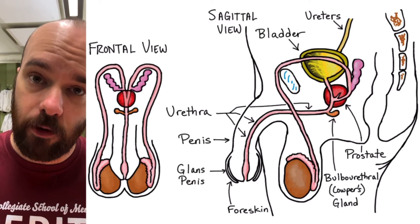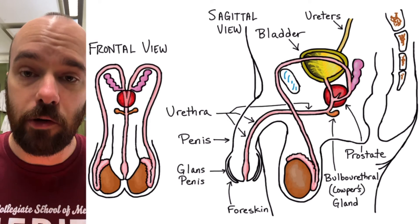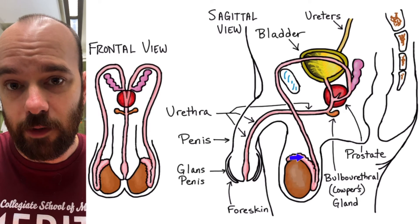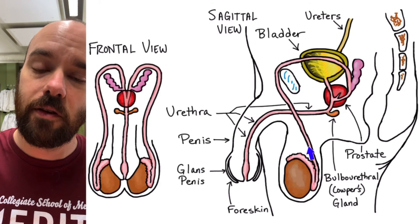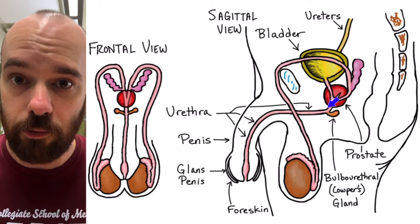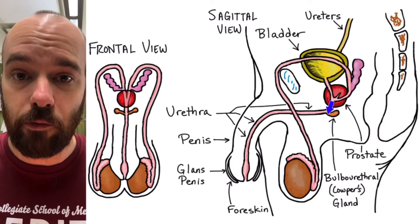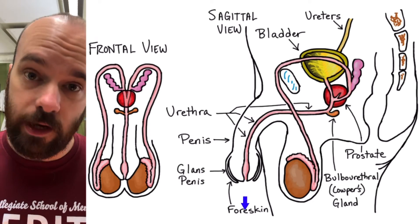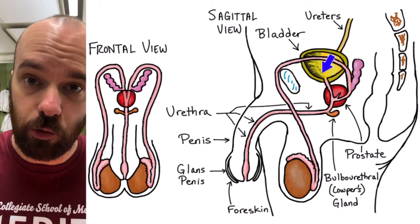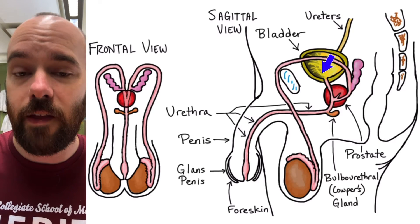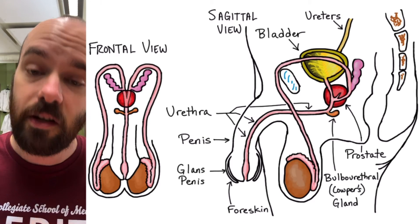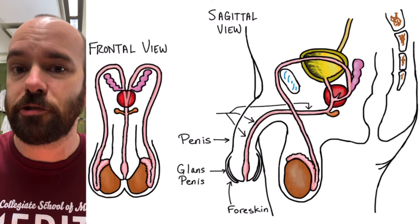To follow the path of sperm traveling from the testes to the outside of the body: sperm are made in the testes, they develop as they travel through the seminiferous tubules, through the epididymis, then travel up through the vas deferens, then back, and then down, where they mix with semen produced by the seminal vesicle, prostate, and bulbourethral glands. From the vas deferens, they connect to the urethra and travel out through the penis. To follow the path of urine: it starts in the kidney, travels down through the ureters into the bladder where it's stored, then during urination the bladder contracts and expels urine down through the urethra to the outside of the body. As a reminder, testosterone doesn't travel through any of this — it goes straight from the testes into the bloodstream.